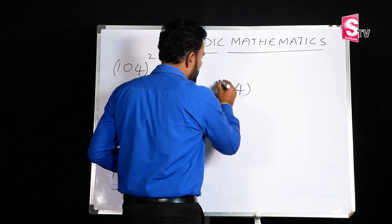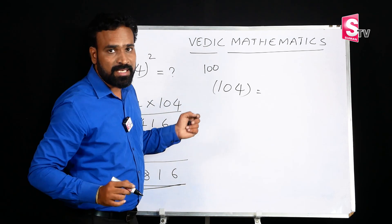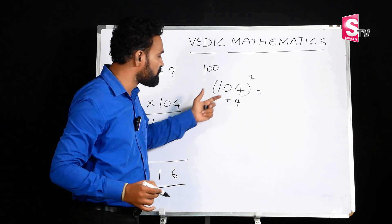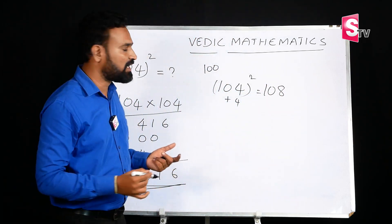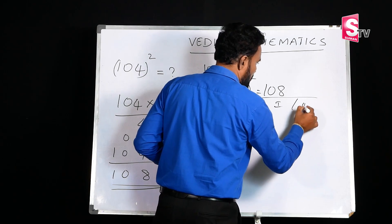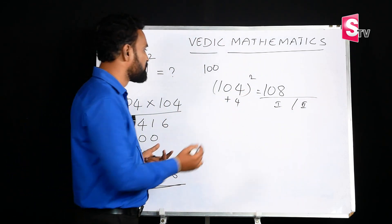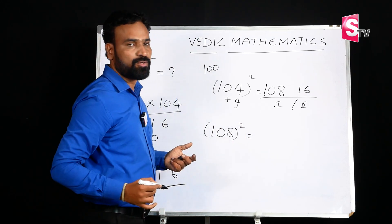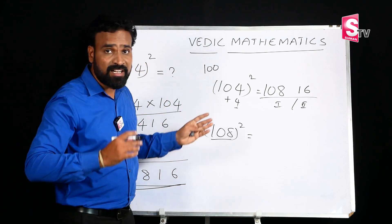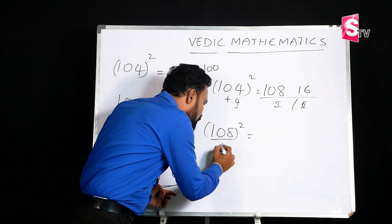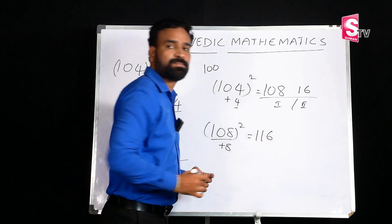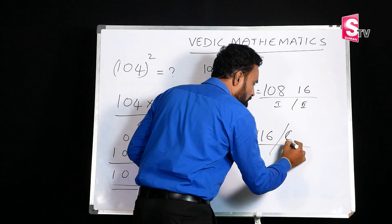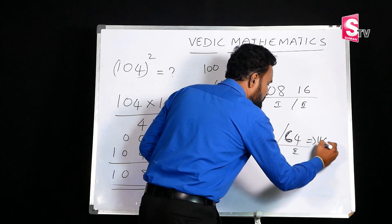For 104 whole square, the base is 100 and the deviation is plus 4. First part: 104 plus 4 equals 108. Second part: 4 squared equals 16. So the answer is 10816. For 108 whole square, the base is 100 and the deviation is plus 8. First part: 108 plus 8 equals 116. Second part: 8 squared equals 64. So the answer is 11664. Practice problem: 107 whole square — write your answer in the comment section.